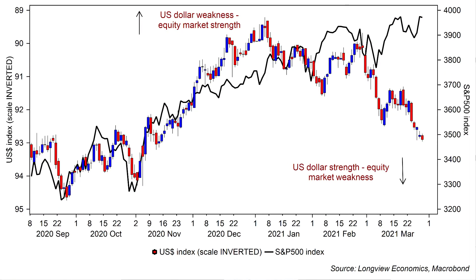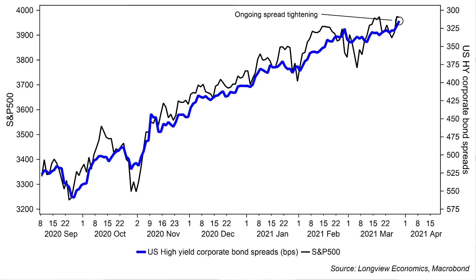So there's some strange behaviour in markets — some dislocation at a sector level. Perhaps it relates to the margin call and forced sale of Archegos assets. But at a headline equity index level, markets have held up reasonably well, particularly given some further strength in the US dollar with the DXY making a new local high yesterday, which in recent months has been consistent with equity market weakness. That hasn't happened this time. Elsewhere, the credit market is behaving well, with US high yield corporate bond spreads tightening further yesterday — now at their tightest level since 2014.